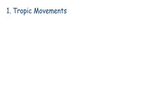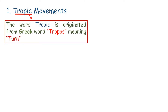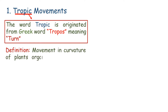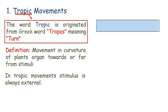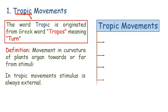Tropic movement: the word tropic is originated from the Greek word tropos meaning turn. It is the movement in the curvature of a plant's organ towards or away from stimuli. In tropic movements, the stimulus is always external.